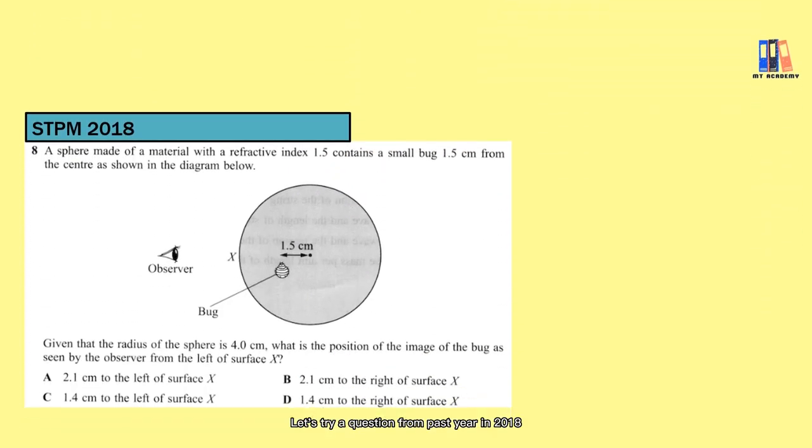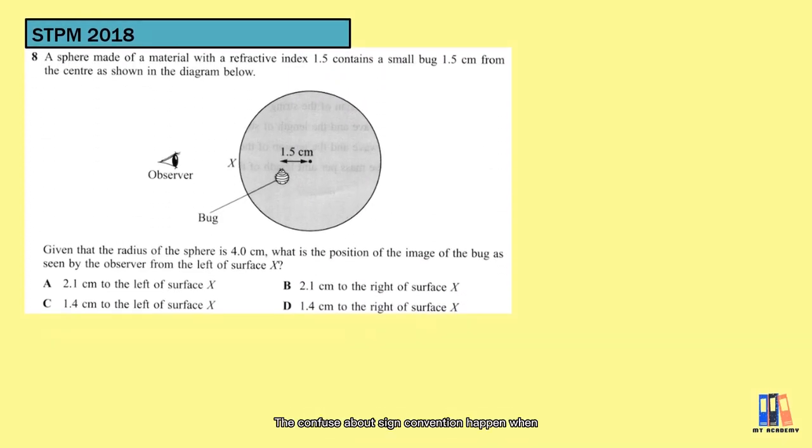Let's try a question from past year in 2018. The confusion about sign convention happens when the object is in a denser medium. There is a small bug inside a sphere with medium of refractive index 1.5, and it is 1.5 cm away from the center of curvature. So if we are referring to the spherical surface on the left, the object distance will be equal to the radius 4 cm minus 1.5 cm equal to 2.5 cm.